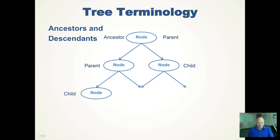Ancestors: in a deeper tree, the root node is an ancestor of all the nodes in the tree, and all the nodes in the tree are descendants of the root node. The parent node is an ancestor; a descendant is a child. There is no relationship between the right child and the left child, because the left child is not part of the right child's subtree.